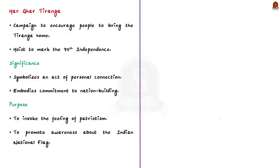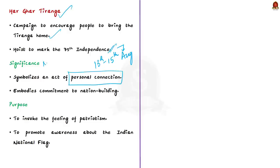Now let us come to the initiative Har Ghar Tiranga. This is a campaign to encourage people to bring the Tiranga — the tricolour flag — to their home and hoist it to mark the 75th year of India's independence. People are encouraged to hoist it between August 13th and 15th. Before this campaign, our relationship with the flag has always been more formal and institutional than personal. Bringing the flag to our homes reflects personal connection to the Tiranga, and is also an embodiment of our commitment to nation building. The idea is to invoke patriotism in the hearts of people, promote awareness about the Indian national flag, and invoke a sense of ownership in the people.